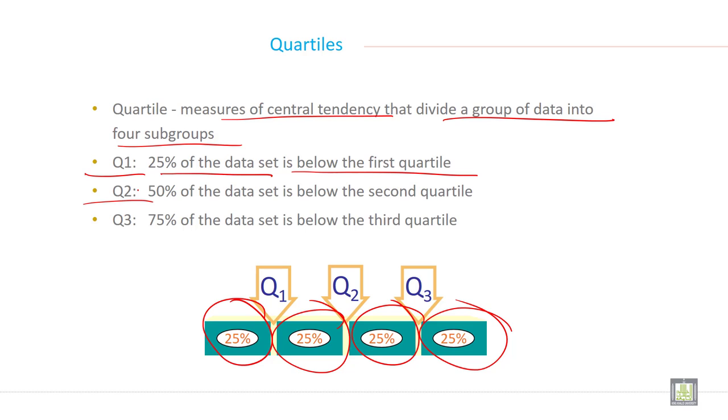Second quartile Q2 means 50% of the data set is below the second quartile. Q3 means 75% of the data set is below the third quartile.